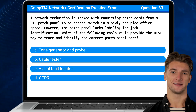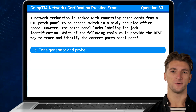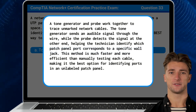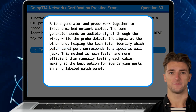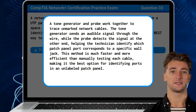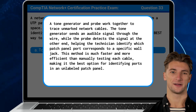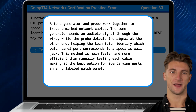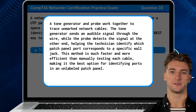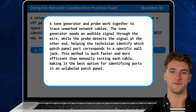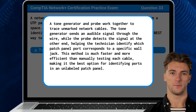The answer is A: tone generator and probe. A tone generator and probe work together to trace unmarked network cables. The tone generator sends an audible signal through the wire while the probe detects the signal at the other end, helping the technician identify which patch panel port corresponds to a specific wall jack. This method is much faster and more efficient than manually testing each cable.